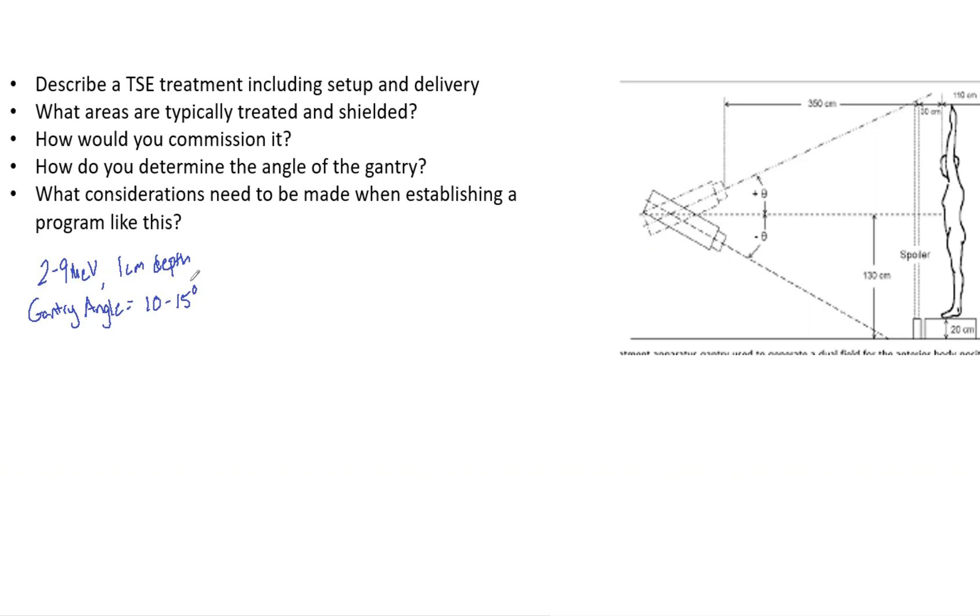to avoid bremsstrahlung x-ray contamination. The photons—bremsstrahlung photons—coming out of the treatment head, if they were directly in front, would all be going toward and hitting the patient. However, with the angle, maybe some scattered photons hit, but a lot are angled outside the patient. Also, with that change in beam angle, you get a uniform beam on the patient, providing a homogeneous dose. You want to use six fields, and that is